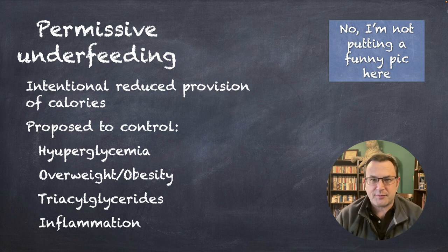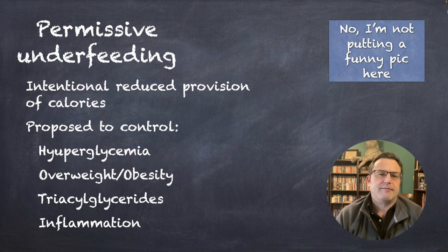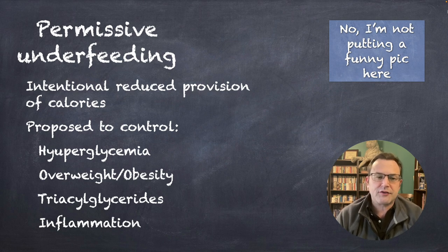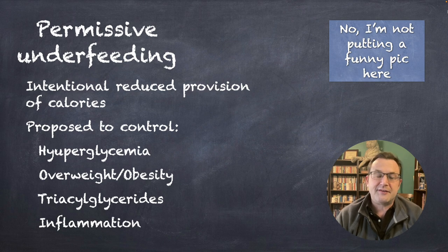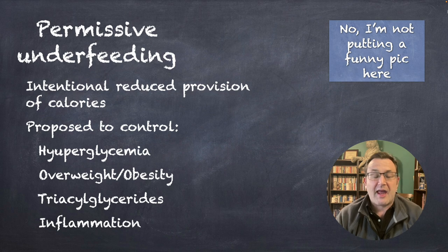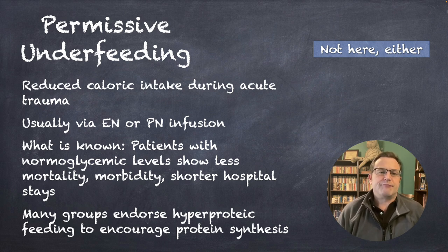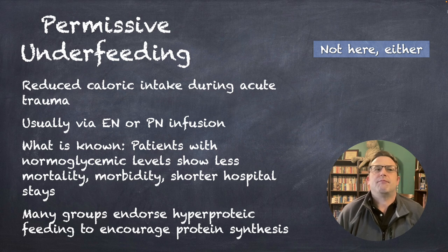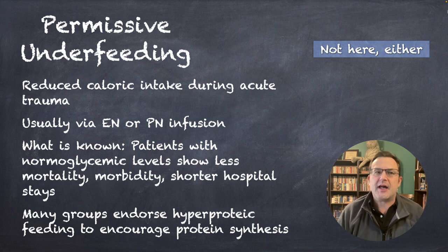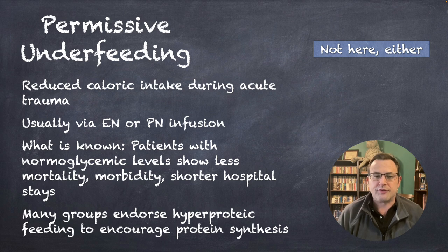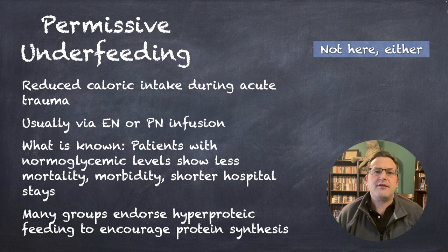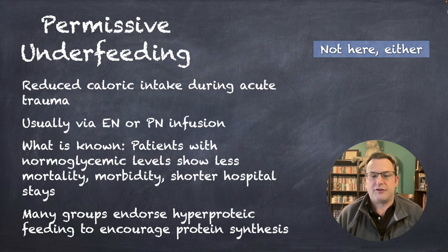So, we're going to talk really quickly about permissive underfeeding. This comes up especially in geriatric care. We're just going to go over the definition of it very quickly. It's the intentional reduced provision of calories. It's proposed to control hyperglycemia, obesity, triacylglycerides, and inflammation. During an acute event, blood sugar increases. It has been shown that patients with hyperglycemia have poorer outcomes than patients with controlled glucose levels. So, the argument is that we care not to overfeed them.